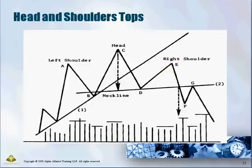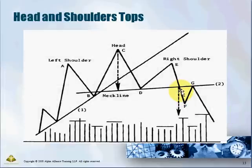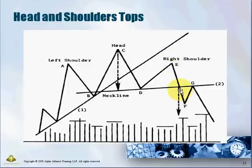Another approach is to go short only on the breaking of the neckline, which is the completion of the head and shoulder pattern. Alternatively, you can wait for a throwback after the neckline break — when you see confirmation of resistance at the neckline (previously a support) and price turns down, that is also a point to go short. So to summarize, you can probe short early, wait for the neckline break, or wait for the throwback confirmation. That covers how to trade the head and shoulder top — thank you for visiting the blog.